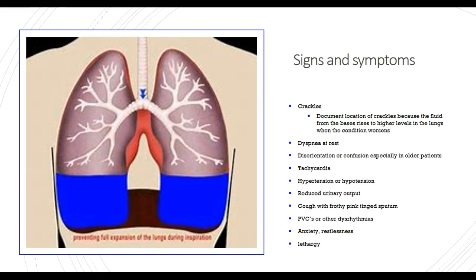We saw that the patient was tachycardic — a classic sign when the body is in distress with compromised perfusion. He'll most likely have decreased urinary output. Other signs include cough with frothy pink-tinged sputum, PVCs or other dysrhythmias, and anxiety, restlessness, or lethargy. Typically anxiety and restlessness come first as they're oxygen-starved and can't catch their breath, and then after prolonged work of breathing with the heart racing at 120 beats per minute, they become lethargic.